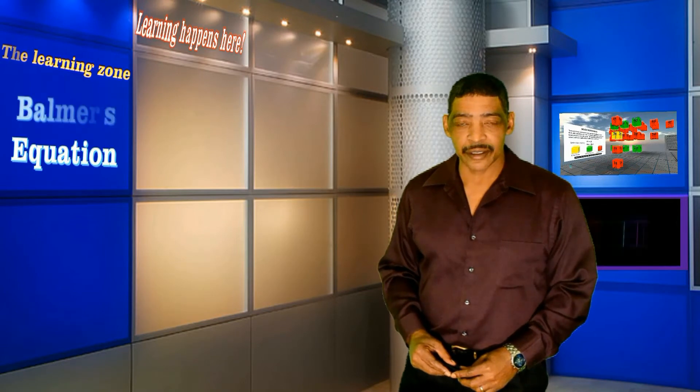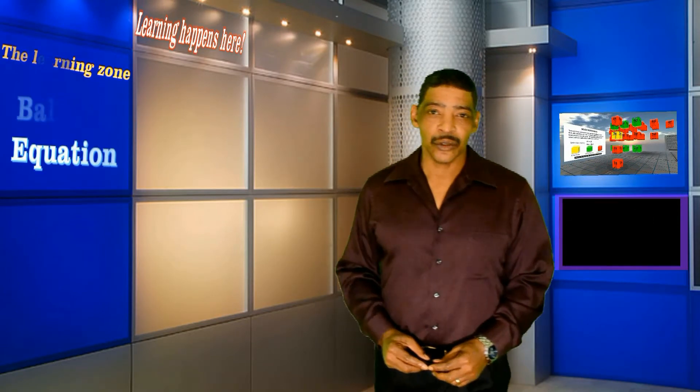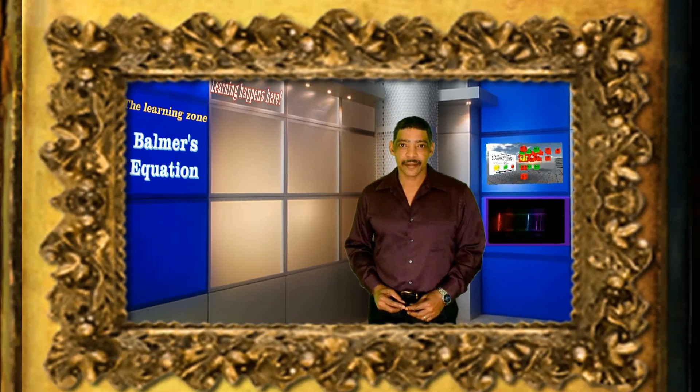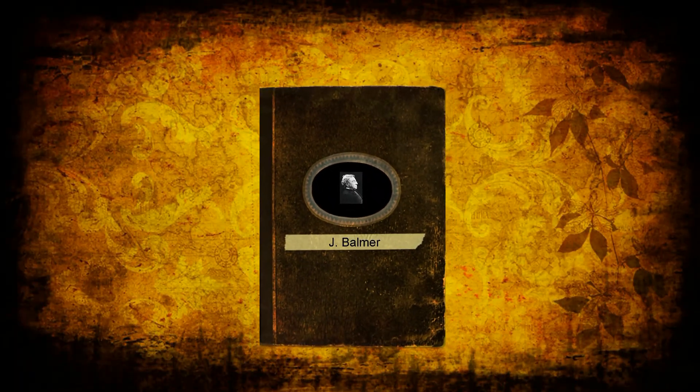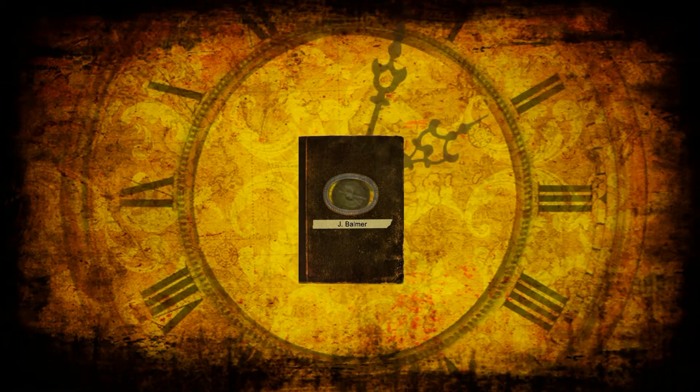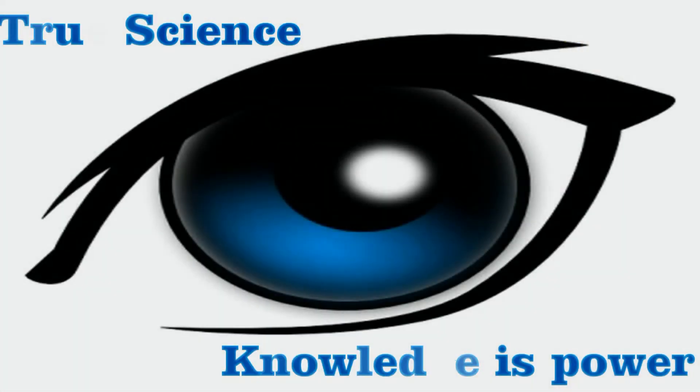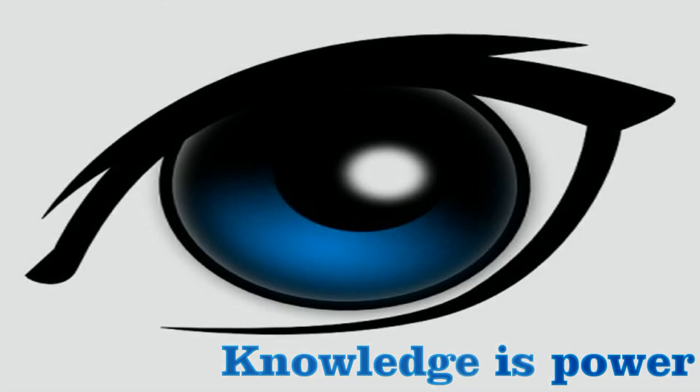This concludes my explanation of how to use Balmer's formula to determine hydrogen's bright line spectrum. Thank you. Hopefully this video has been helpful. Thanks for watching.